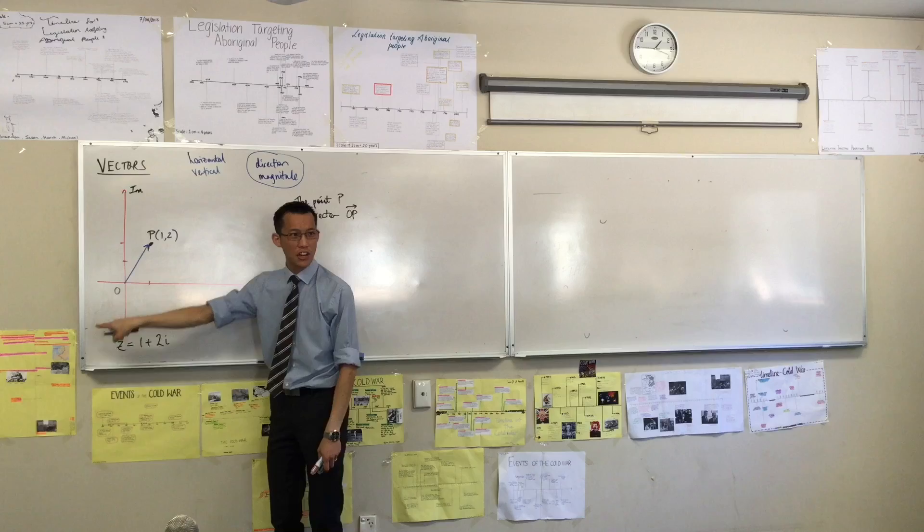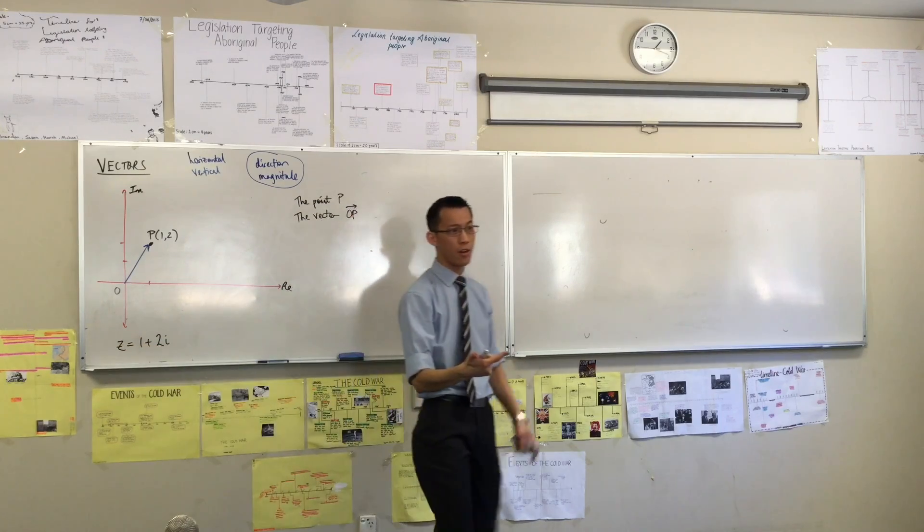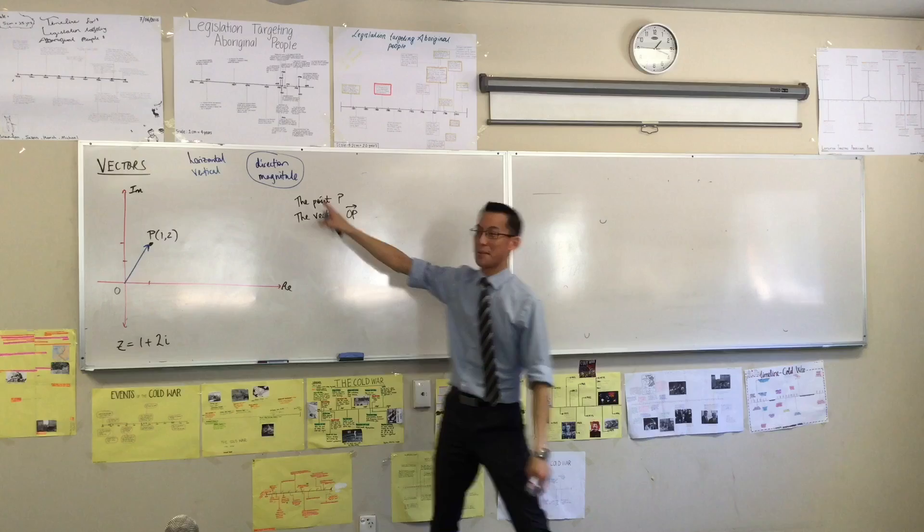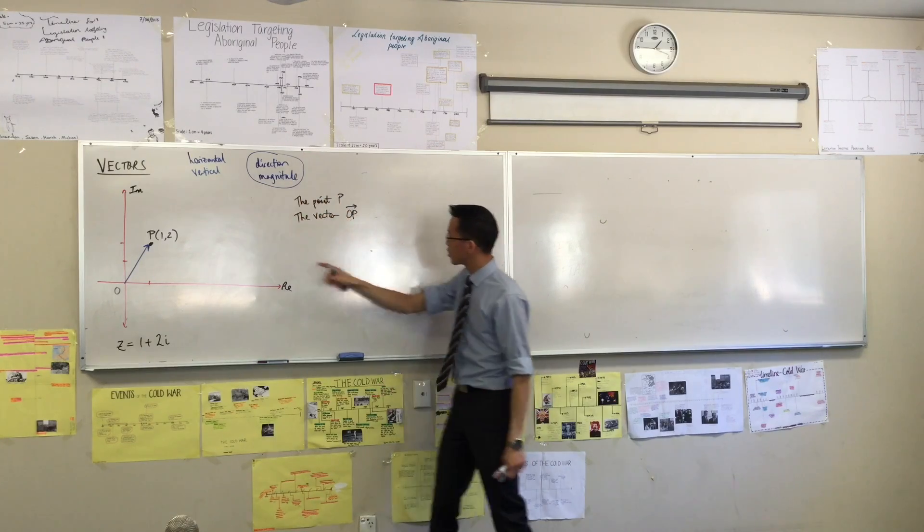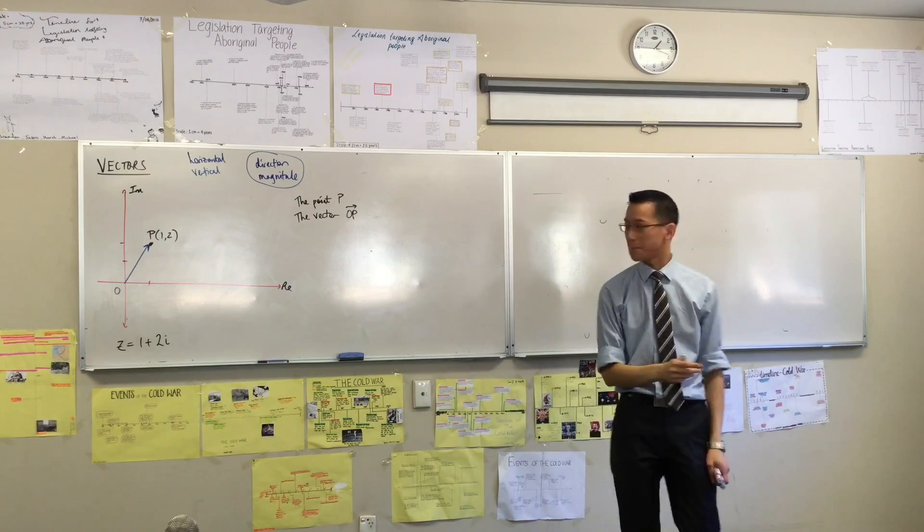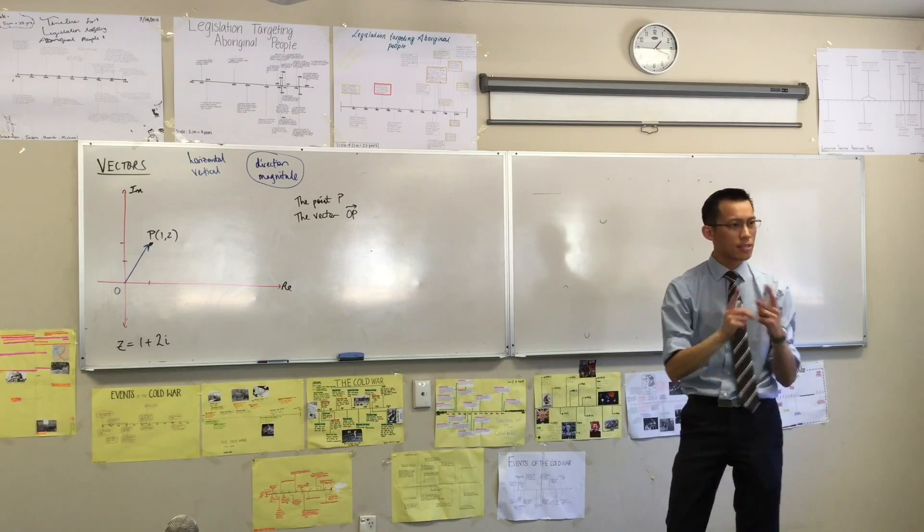OP and PO have the same magnitude, but they don't have the same direction, do they? Does this make sense? So to indicate that, I have this arrow here, and the order of the letters really matters to me. Now, here's the thing.